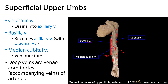The basilic vein is going to dive deep and come together with the brachial veins, which are venae comitantes of the brachial artery, to form the axillary vein. That axillary vein will traverse the axilla and then ultimately become the subclavian vein. The cephalic vein is going to dive deep in the deltopectoral triangle where it meets up with the axillary vein.